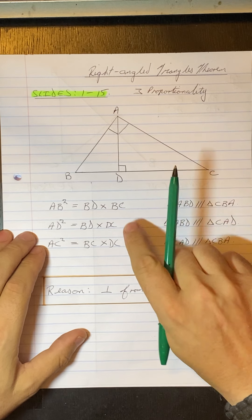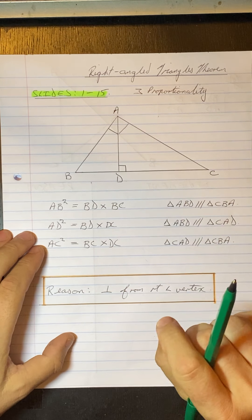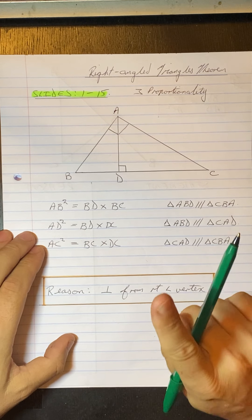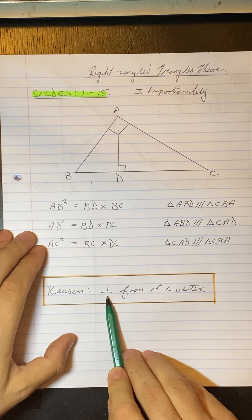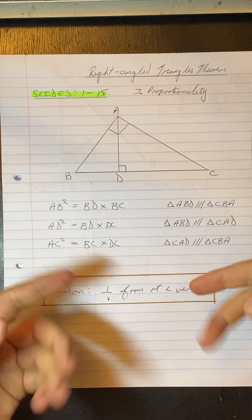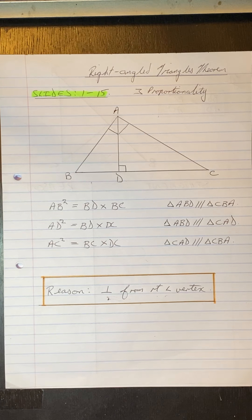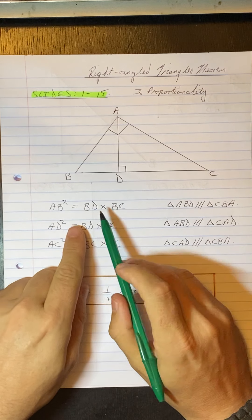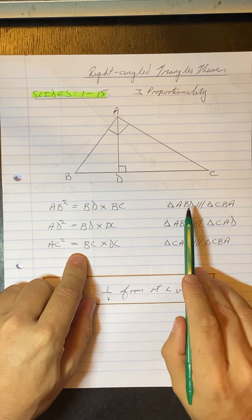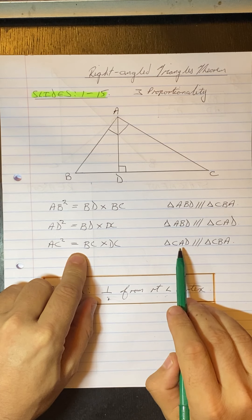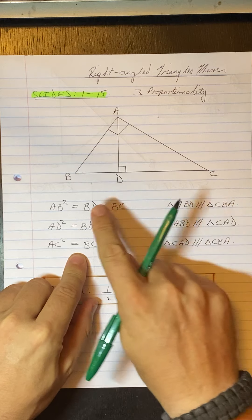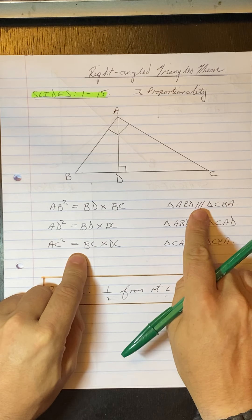Whenever you use one of these, in your statement-reason column, the reason is going to be 'perpendicular from right-angle vertex.' The reason why we have these three results is because we have similar triangles, and with similar triangles you get proportions coming out, and these results come from that.